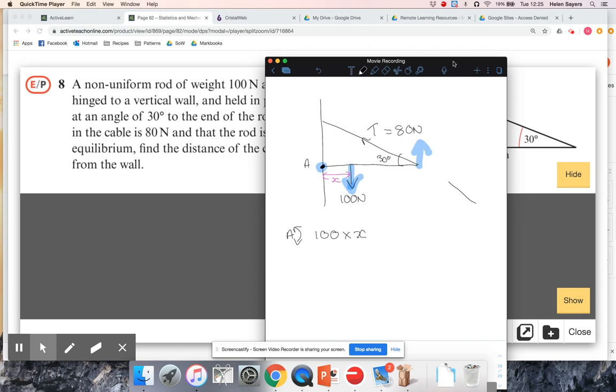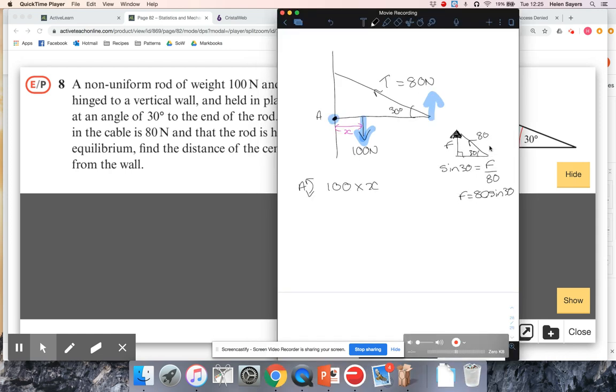Now when doing the anti-clockwise moment, I've just got to find the perpendicular force. That's absolutely fine. That is going to involve a bit of SOHCAHTOA because I know that that is 80 and I just want to find the component of that that's working perpendicular to the rod, so straight up. Let's just call that F. I've got the hypotenuse and I want the opposite, so that's going to be sine. Sine 30 is opposite over hypotenuse, so that's going to be 80 sine 30.